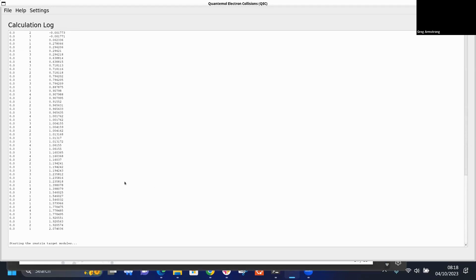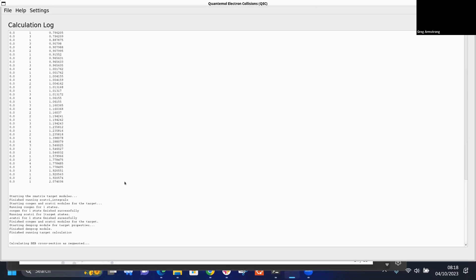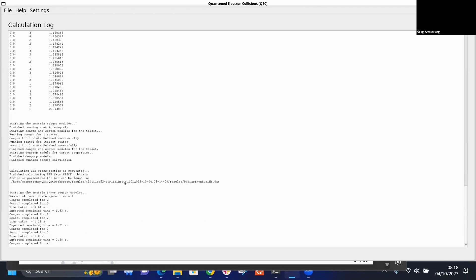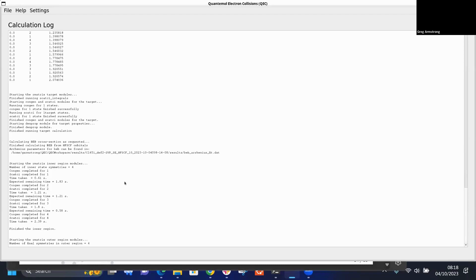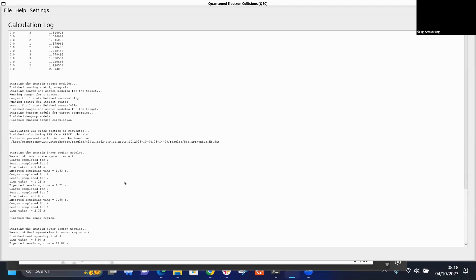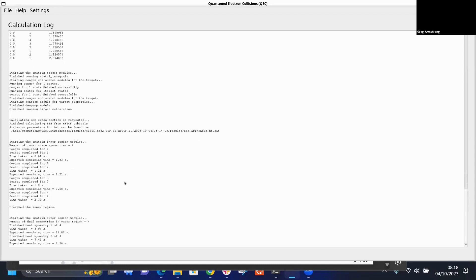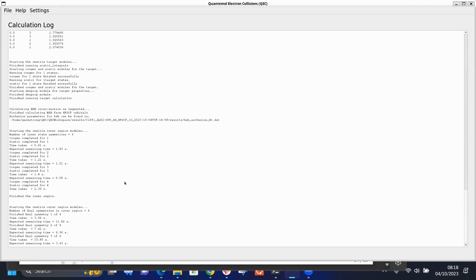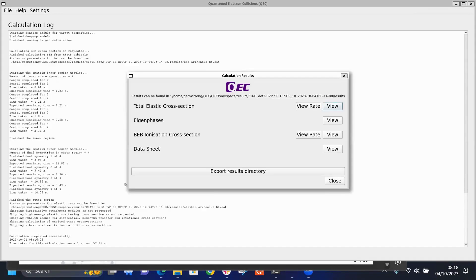This will give a long list and gives you an idea of the size of the basis you're using. The initial part is the target calculation. Mostly what it's doing at this stage is spending time in a program called SWIRCI calculating two-electron integrals for the dielectronic repulsion Hamiltonian. In this case that took the greatest length of time. It's then going to go through the rest of the target modules, then racing through the inner region into the outer region where it has a set of symmetries to do, each of which takes a few seconds.